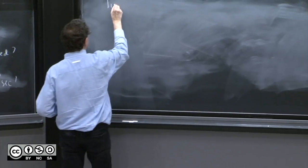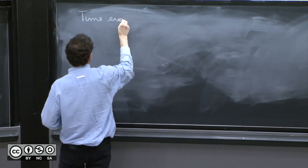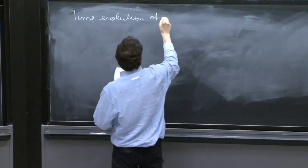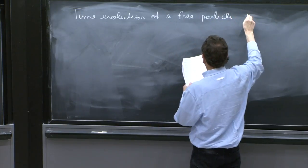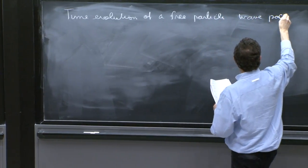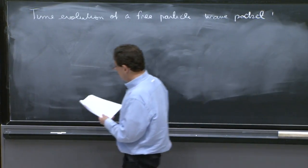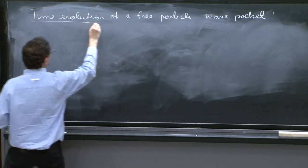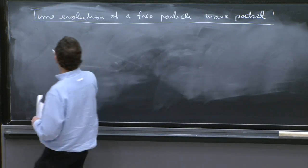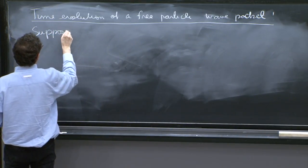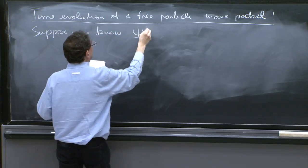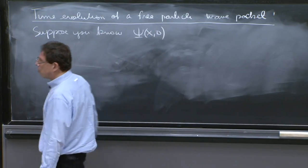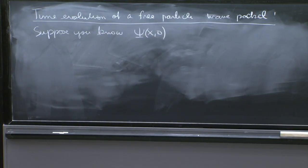Time evolution of a free particle wave packet. Suppose you know ψ(x,0). So what do you do next if you want to calculate ψ(x,t)?